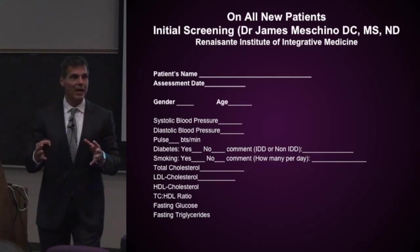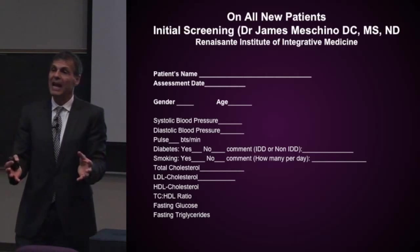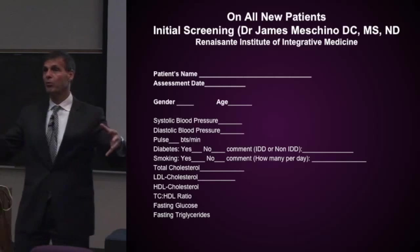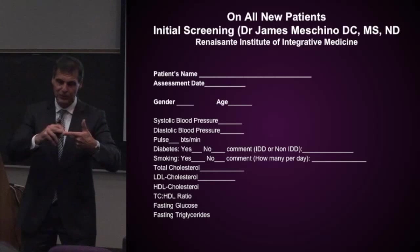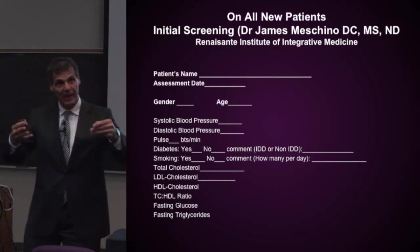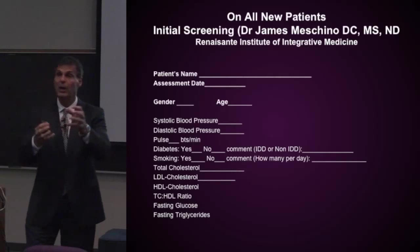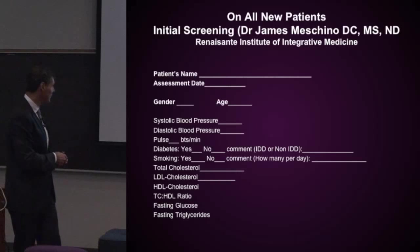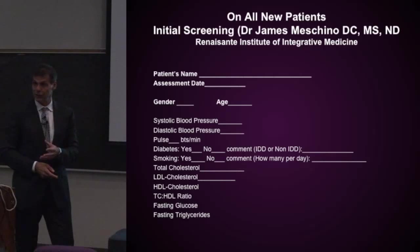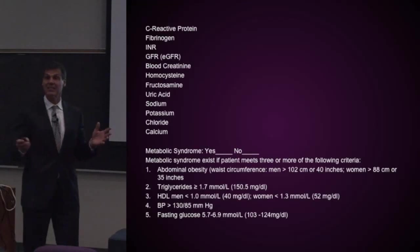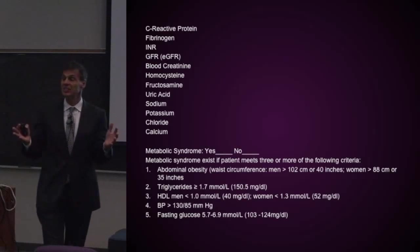The INR is the international normalized ratio — it tells me how sticky the blood is. It used to be called the prothrombin time. Now it's called the INR and uses a reagent to determine blood stickiness. There are certain values there we'll come back to when we discuss anticoagulants. What's the estimated glomerular filtration rate, looking at kidney problems? What's the blood creatinine level? What's the homocysteine level?